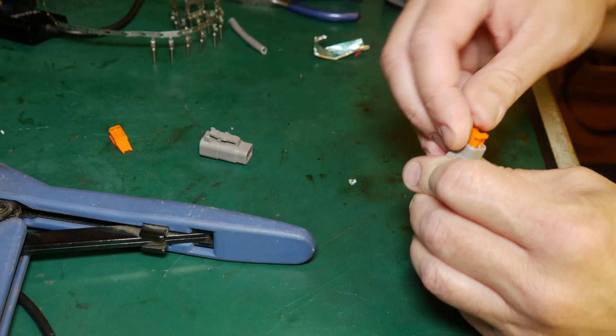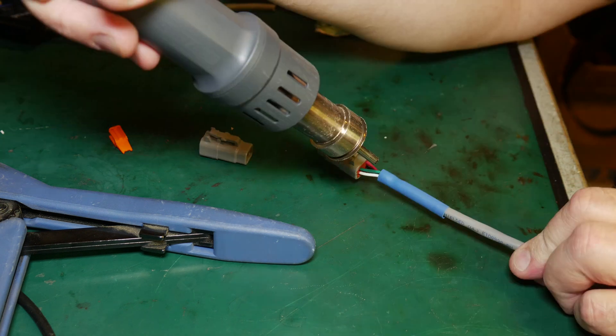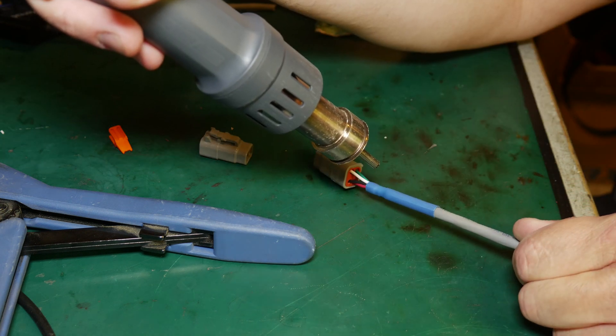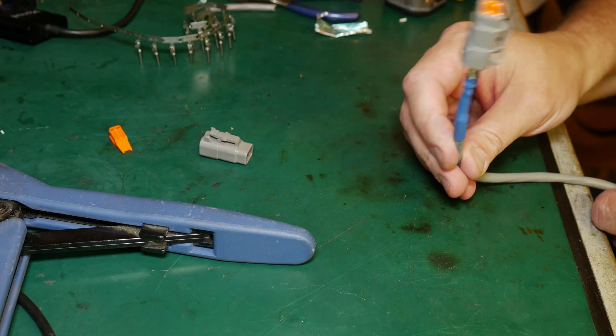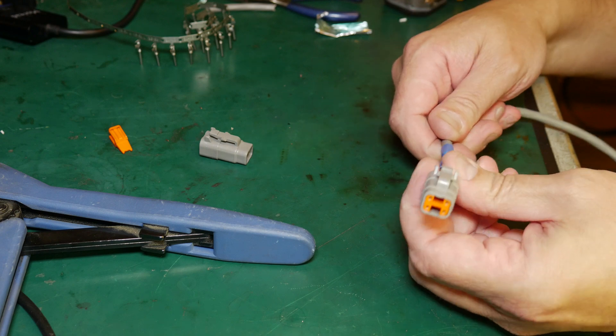These are Deutsch connectors that I'm installing. It's a model DTM, which stands for a miniature Deutsch connector. These are somewhat confusing to order. You have to order the pins and the housings and the retainers all separately, unless you're purchasing them in an assortment.